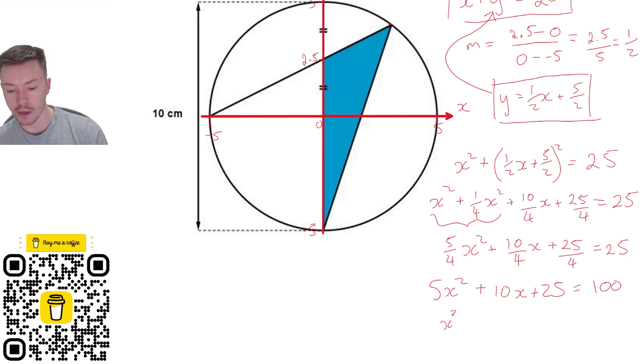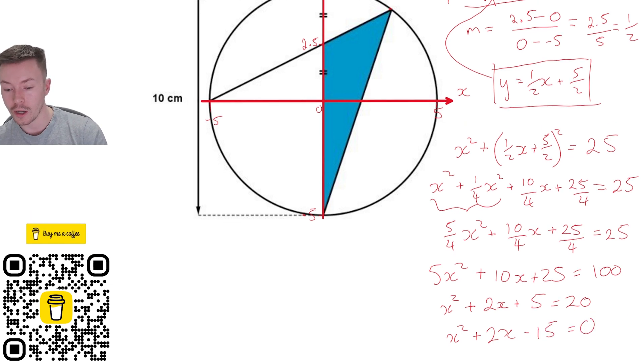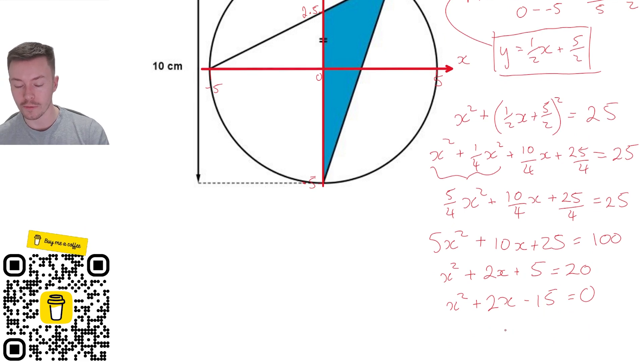Divide everything by 5: x squared plus 2x plus 5 equals 20. Take away my 20 from both sides: x squared plus 2x minus 15 equals 0. Now if I factorize that, I can use 5 and minus 3, so I get (x plus 5)(x minus 3) equals 0.